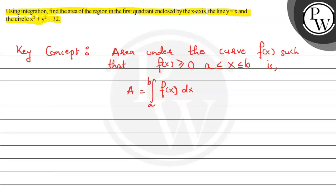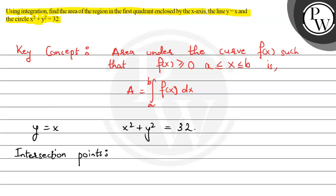In the question we are given two curves: one is the straight line y equals x, and the other is the circle x squared plus y squared equals 32. Now let's get the intersection points. Since y equals x, we substitute into the equation of the circle: x squared plus x squared equals 32, which gives x squared equals 16, and thus x equals plus or minus 4, which implies y is also plus or minus 4.